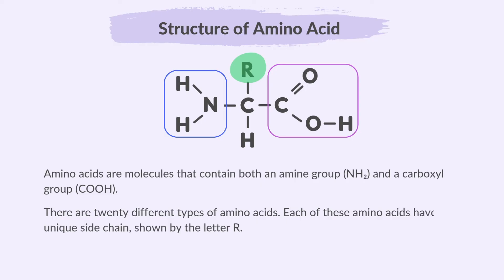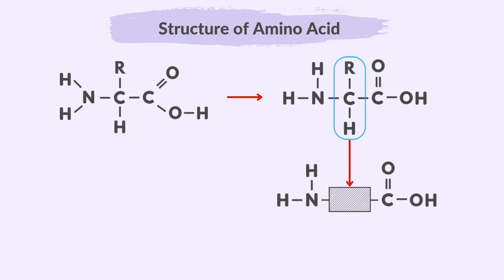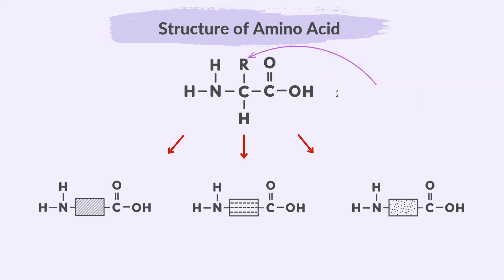There are 20 different types of amino acids, each with a unique side chain shown by the letter R. We will use rectangles to represent the different types of amino acids. The rectangles illustrate the various types of amino acids, which share a similar general structure but have different R groups — each rectangle shows a different amino acid.